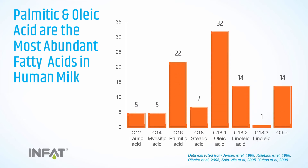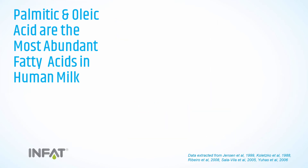Breast milk has a specific fatty acid profile. Palmitic acid and oleic acid are the most abundant fatty acids, and in most standard infant formula, different vegetable oils are used to mimic this profile. However, having a similar fatty acid profile is not enough.